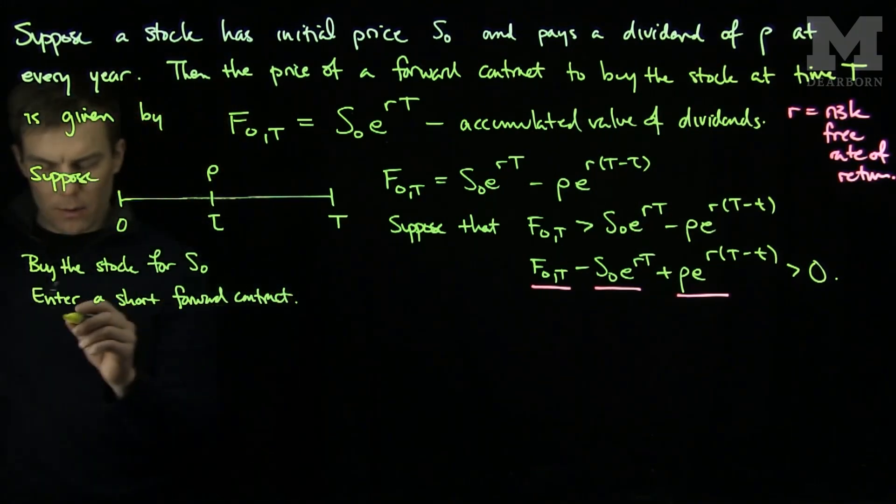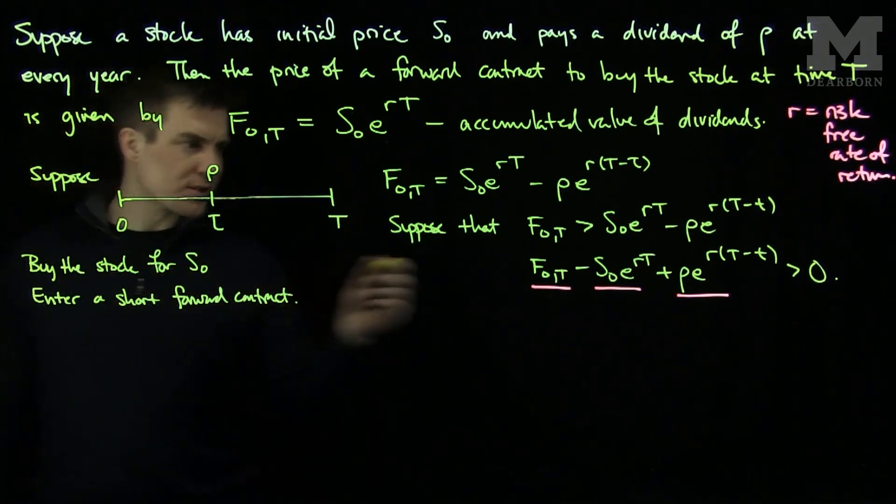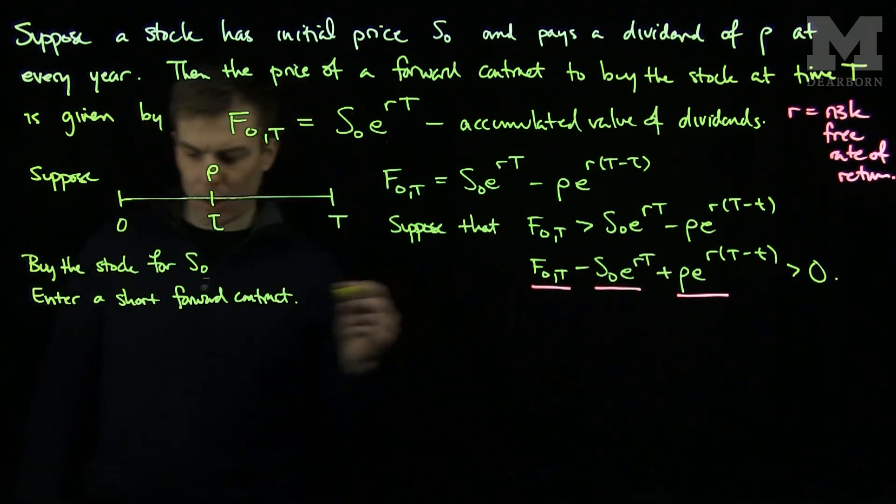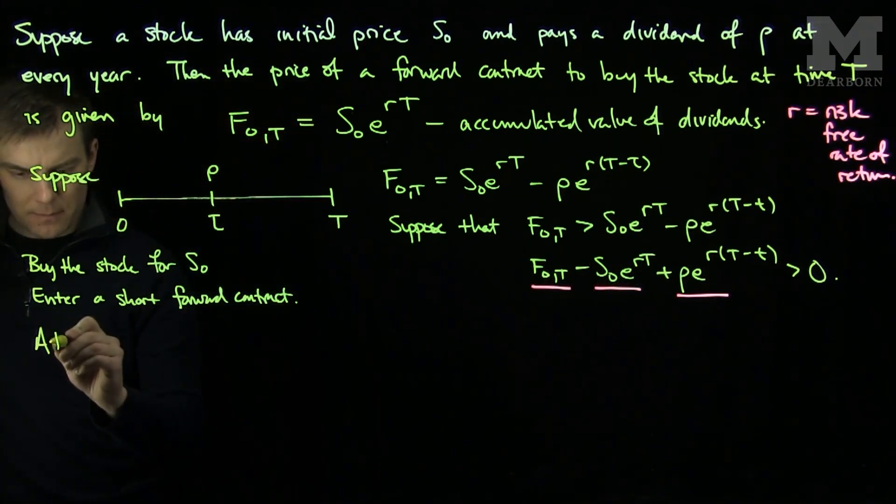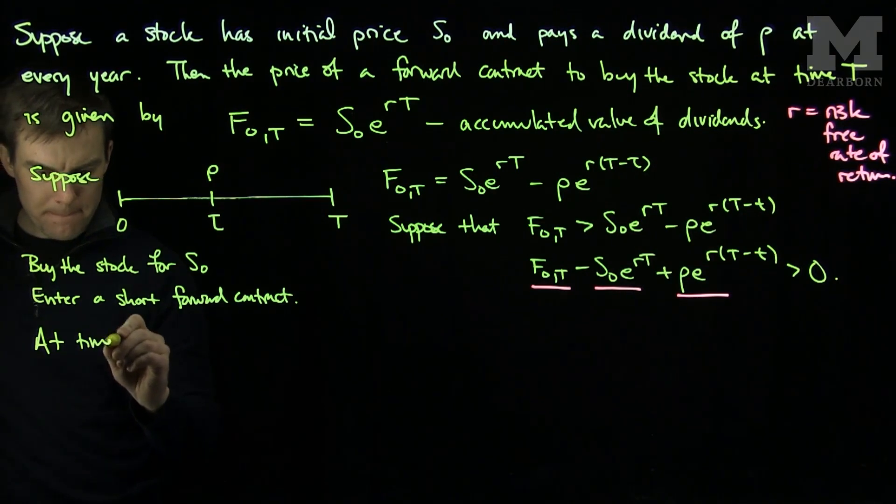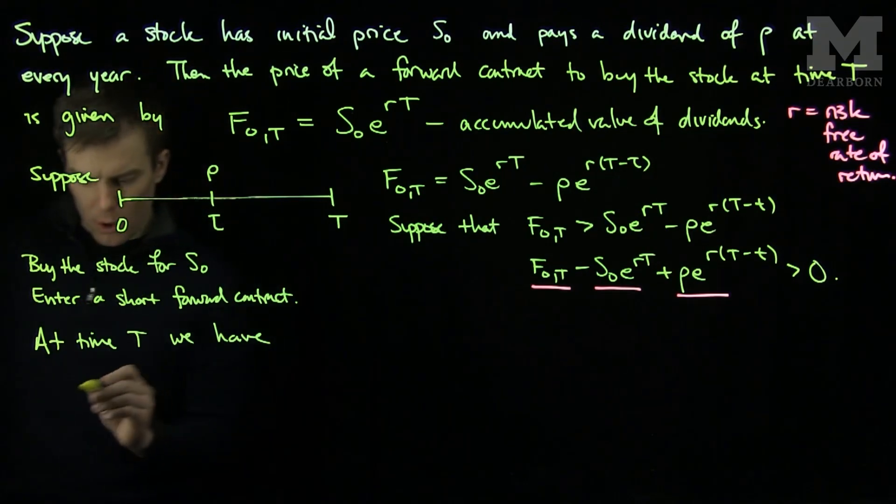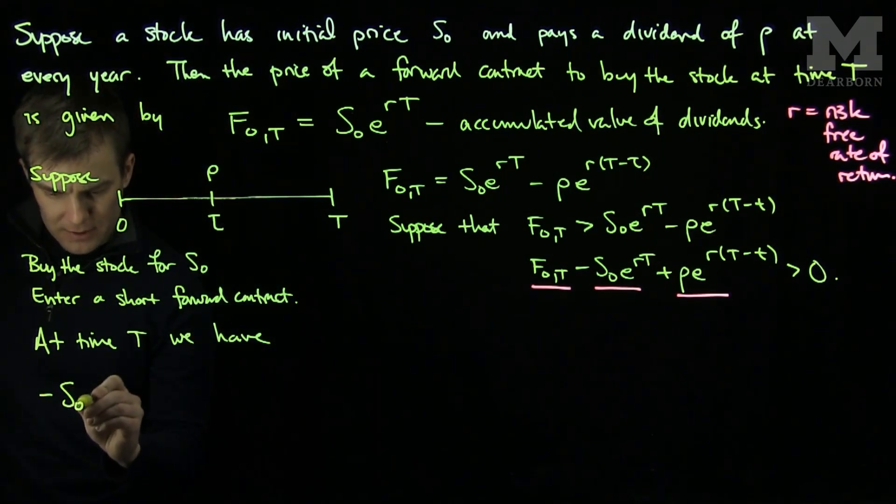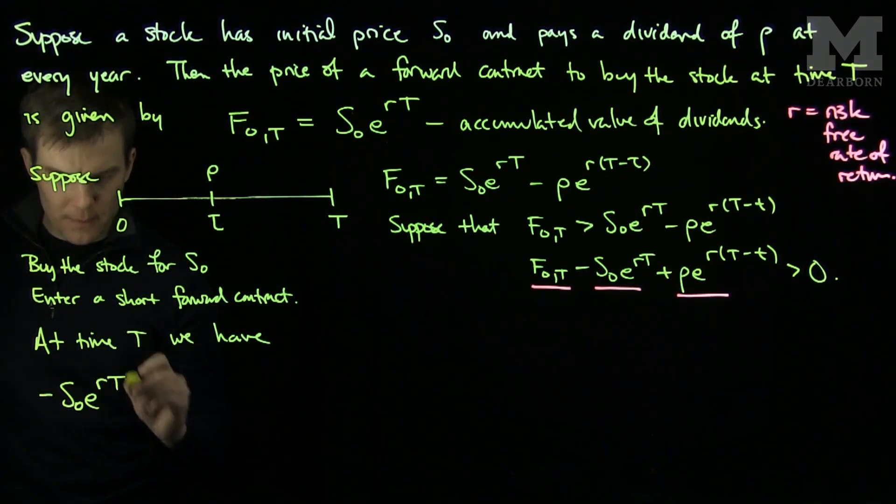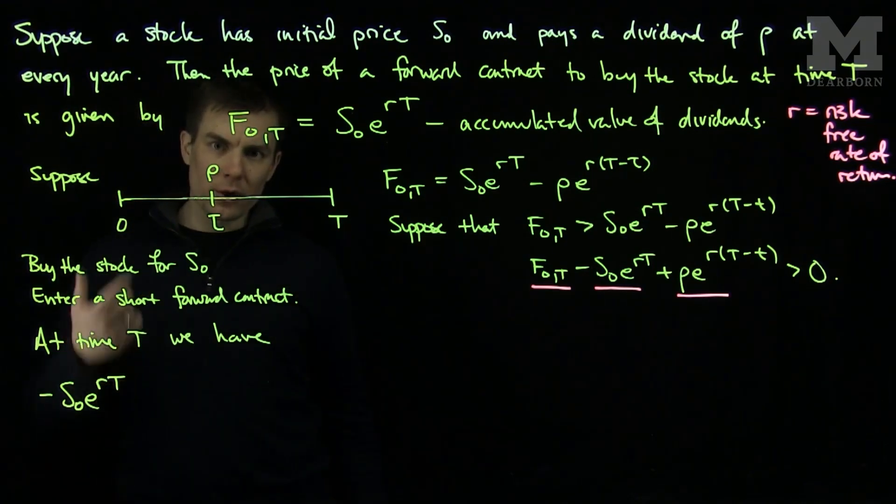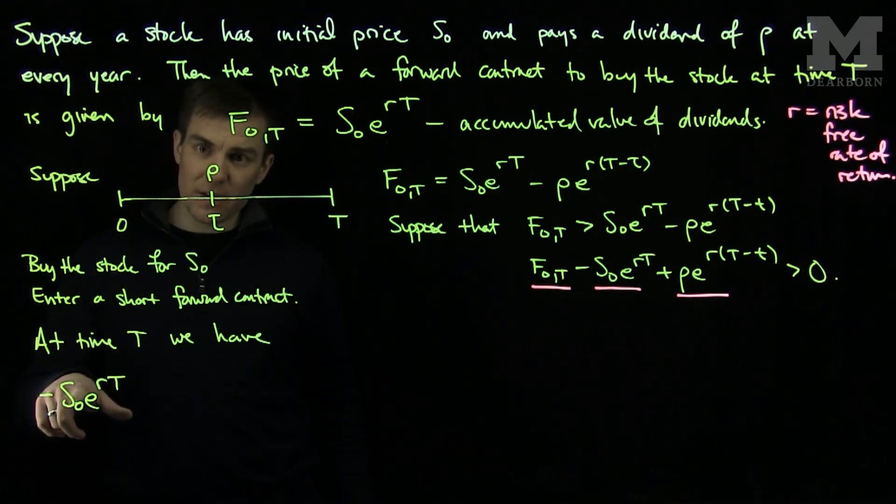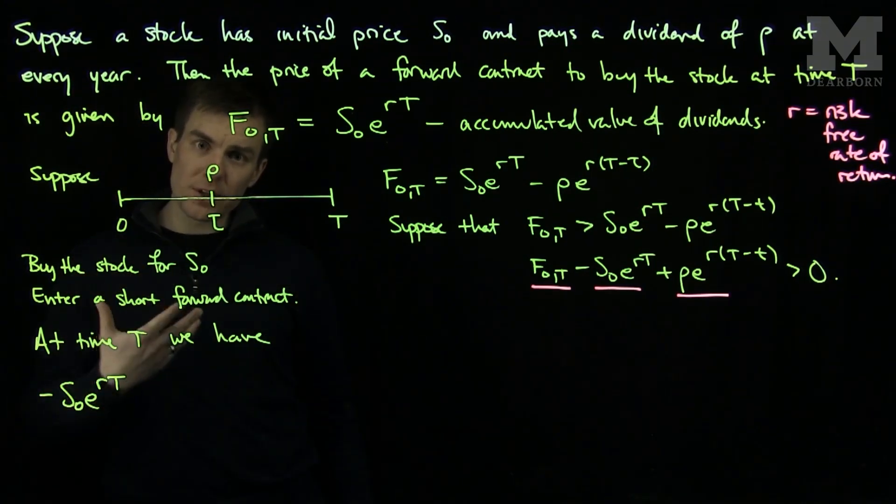At time tau, since we have bought the stock, at time tau, we will get the dividend of rho. So, at time T, we will have negative S0 e to the rT, because the amount we borrowed in order to buy the stock was negative S0 at the initial time, and that has time T to evolve and grow.